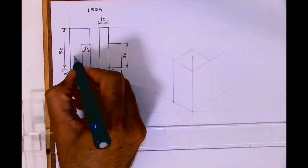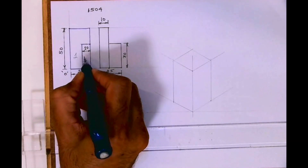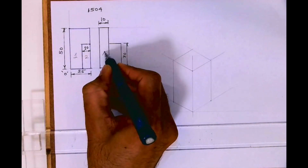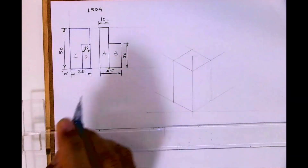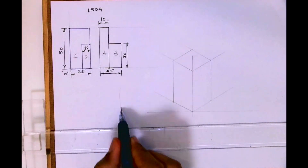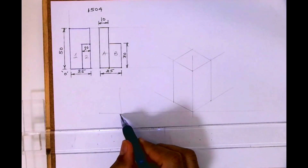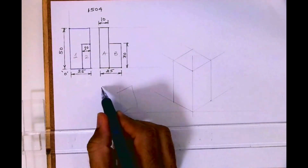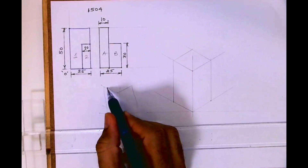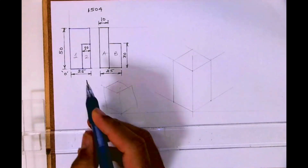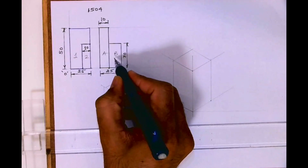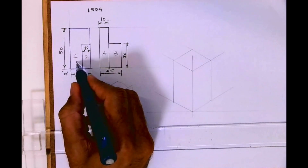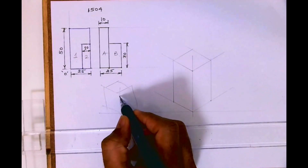Now we have two parts — one and two — and here also we have two parts, A and B. I need to find out which one I can draw first. I'm drawing it in draft and going with the possibility — let's say part one is nearer to me, so first I'm drawing part one.